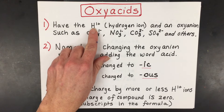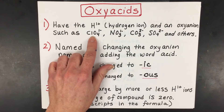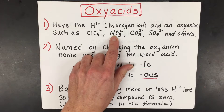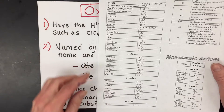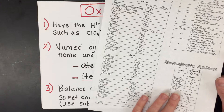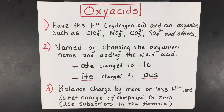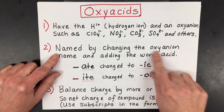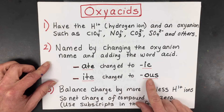Oxyacids are when you have the hydrogen ion and an oxyanion. You're going to need to recognize something like ClO4, which is called perchlorate, or NO3, which is nitrate, carbonate, sulfate, and many other polyatomic ions that are called oxyanions. You have a reference sheet with a list of common polyatomic ions, and the periodic table is not going to be helpful for oxyacids. You take the oxyanion name and change it: 'ate' turns into 'ic' and 'ite' turns into 'ous'.